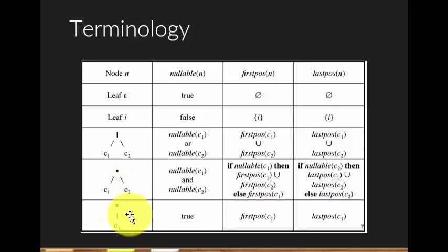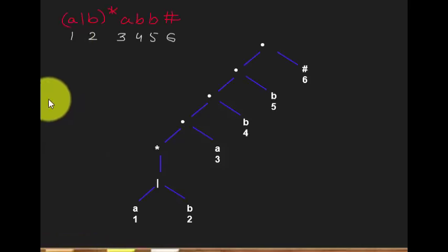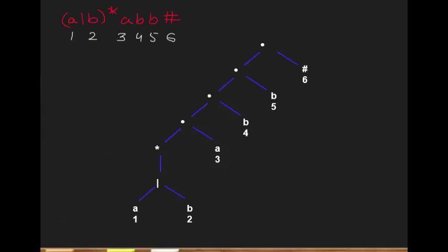For a star node, whatever is the firstpos of its child C1 will be the firstpos of the star node, and whatever is the lastpos of C1 will be the lastpos of the star node. Let's do an example and things will be much clearer.